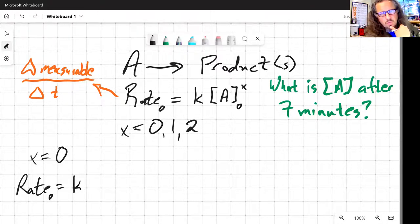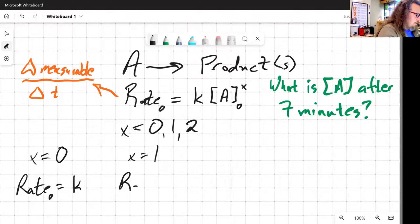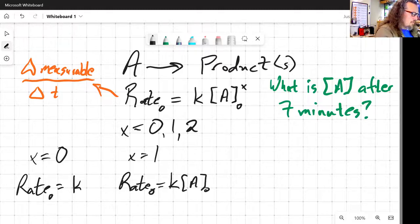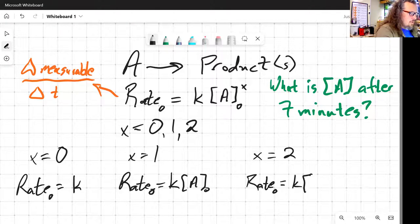Now, we could do the same thing, plug in for 1 and 2 and get similar expressions. So if x equals 1, then rate is equal to k times the initial concentration of A. If x equals 2, then initial rate is equal to k times concentration of A squared.